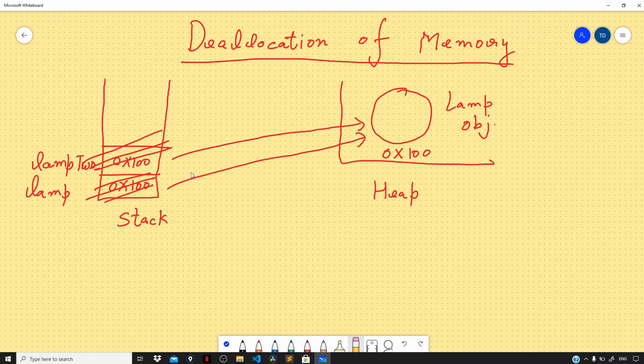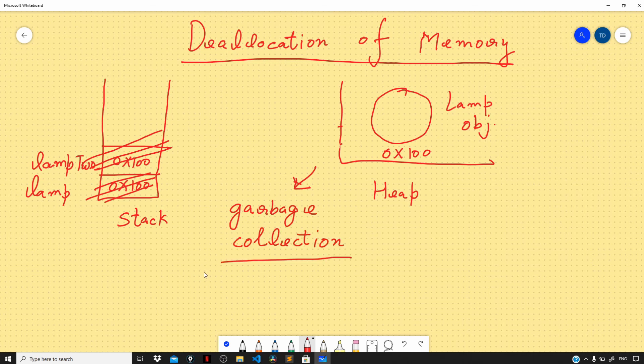This ends up in a situation where we have an object in the heap and there are no references to this object. Once this object becomes unusable for a certain period of time, Java will automatically remove the object on the heap by using a process called garbage collection. If we have unused objects on the heap, their deallocation will be automatically taken care of by the Java runtime using garbage collector.